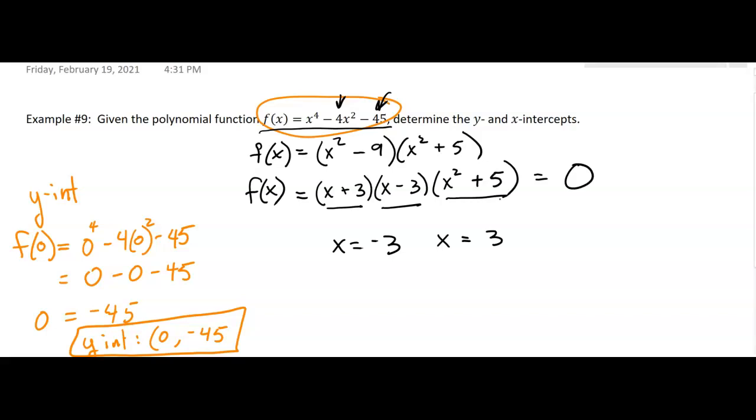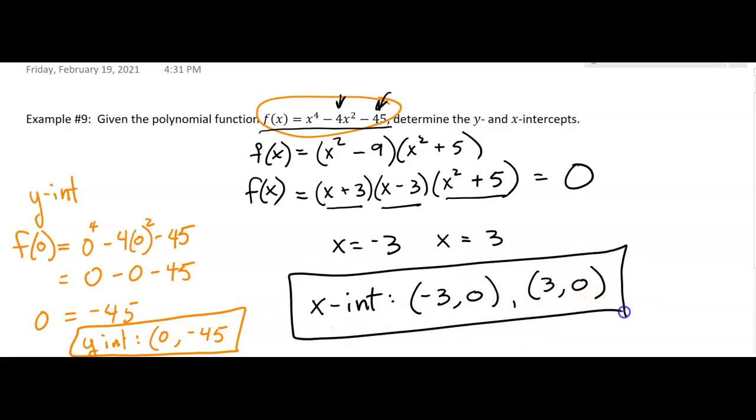Okay, so we just get two x-intercepts here. One will be negative 3, 0. And the other one's going to be 3, 0.